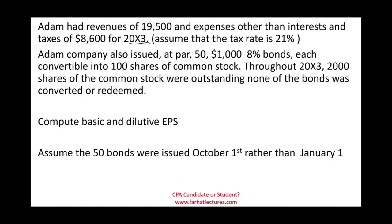Adam had revenues of $19,500 and expenses other than interest and taxes of $8,600 for year X3. We're assuming a 21% tax rate. Adam also had 50 bonds paying 8%, and each of these bonds is convertible into 100 shares. That means we're going to have to compute both the basic and the dilutive EPS, because the bonds are convertible — it means we have a complex capital structure.